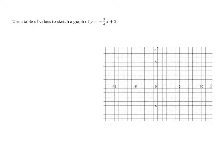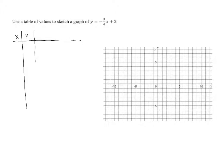Use a table of values to sketch a graph of y equals negative three-fourths x plus two. We're going to make our table of values. We're going to pick x values and calculate the corresponding y values, and y is given by negative three-fourths x plus two.